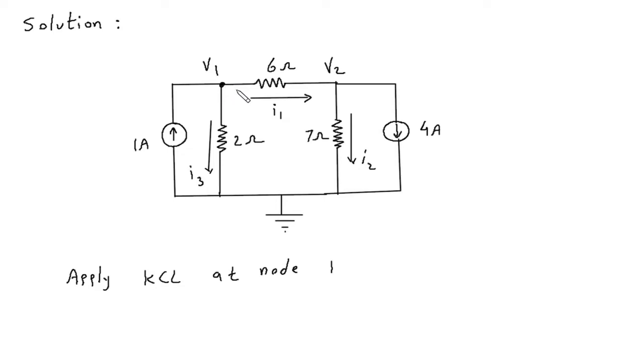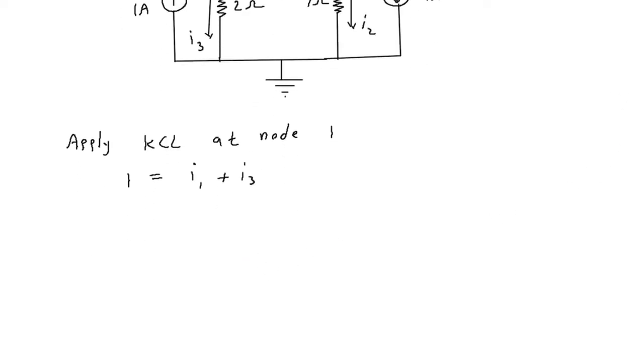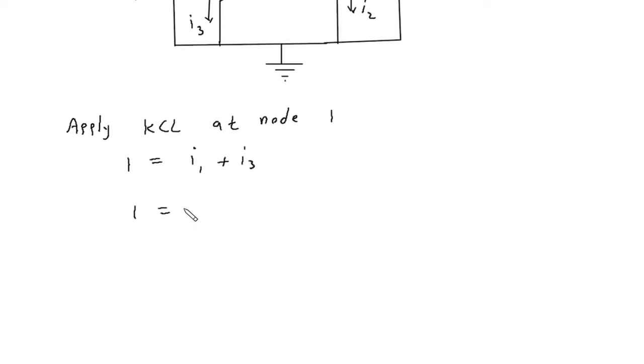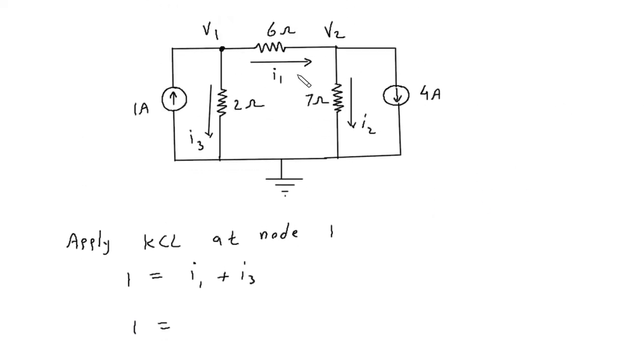Now we apply KCL at node 1. It will be 1 equals I1 plus I3. 1 equals I1 which is V1 minus V2 by 6, plus I3 which will be V1 minus 0 by 2.